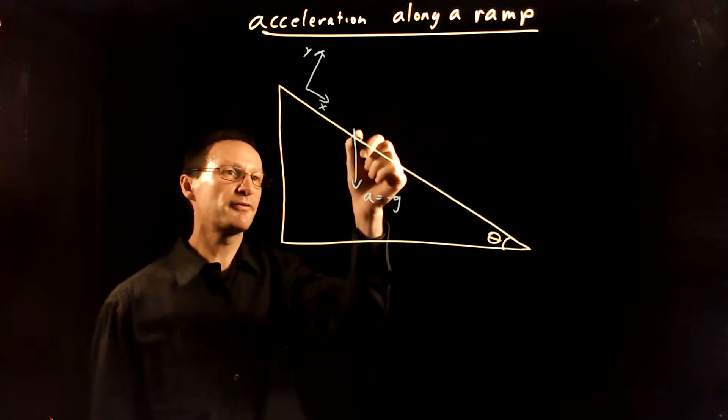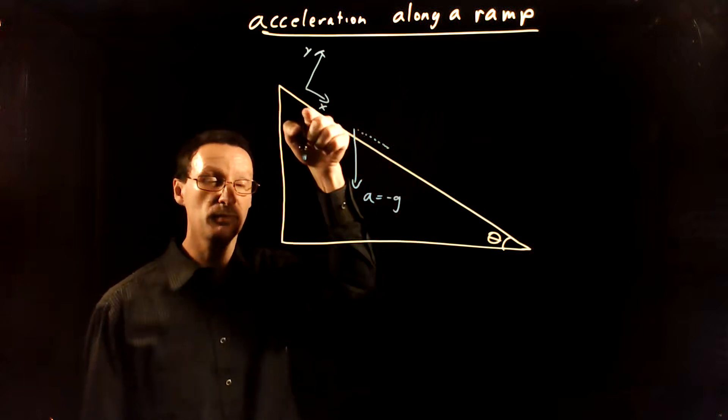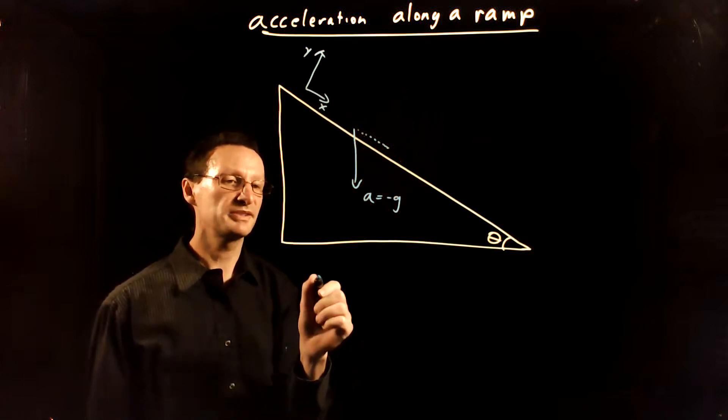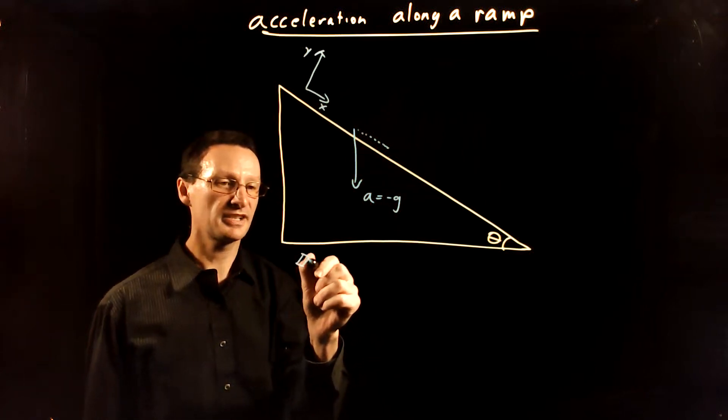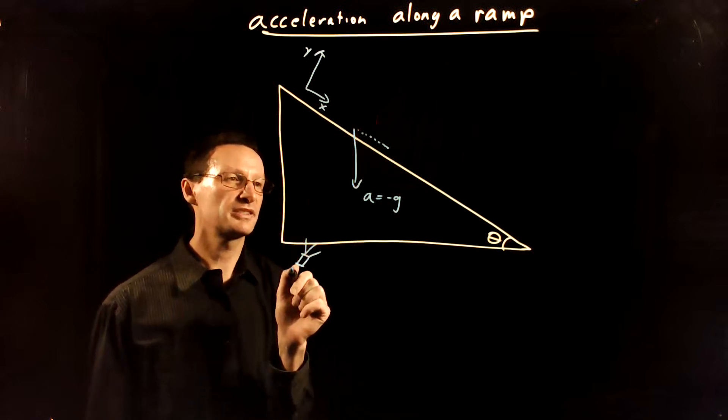In that case we want to find how much of this acceleration points along the ramp or parallel to the ramp, and so we want to take our flashlight and shine it up this way and see how much of it is projected along the ramp.